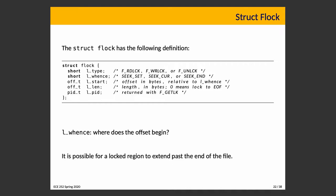SEEK_CUR means relative to where the file pointer currently is, if you've positioned it using seek. The length field specifies how many bytes from the start point to lock. The pid field is populated when you use the get lock command — it tells you information about an existing lock, so you can learn which process has the file locked.